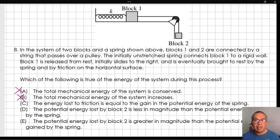C. The energy lost to friction is equal to the gain in the potential energy of the spring. There is no relationship, necessarily, between the amount of energy lost to friction and the amount of energy stored in the spring. The two energies come from the loss of gravitational potential energy of block 2, but they do not have to be equal.